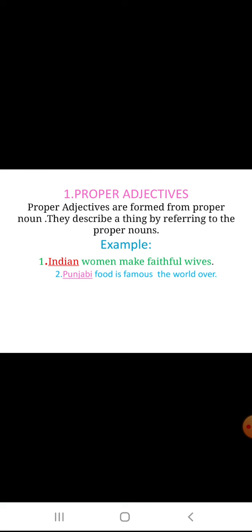Proper adjectives. Proper adjectives are formed from proper nouns. They describe or modify by referring to proper nouns. For example, Indian women make faithful wives — here Indian is a proper adjective. Punjabi food is famous the world over — Punjabi is a proper adjective.